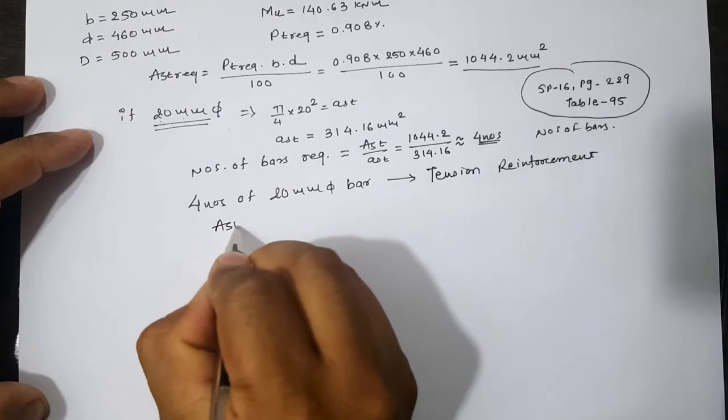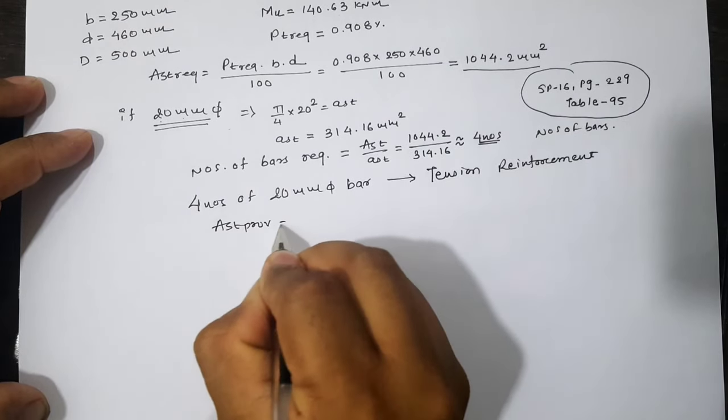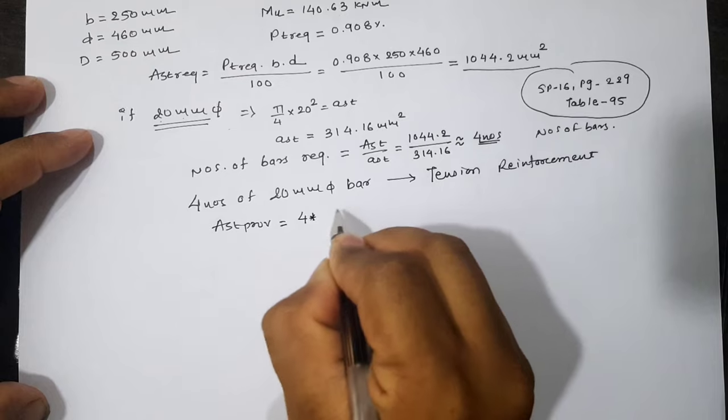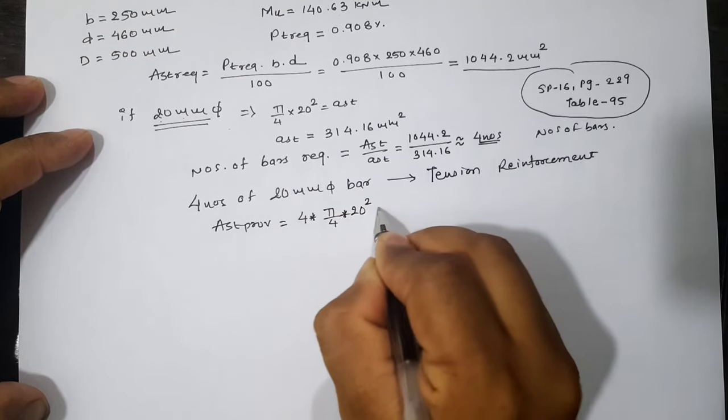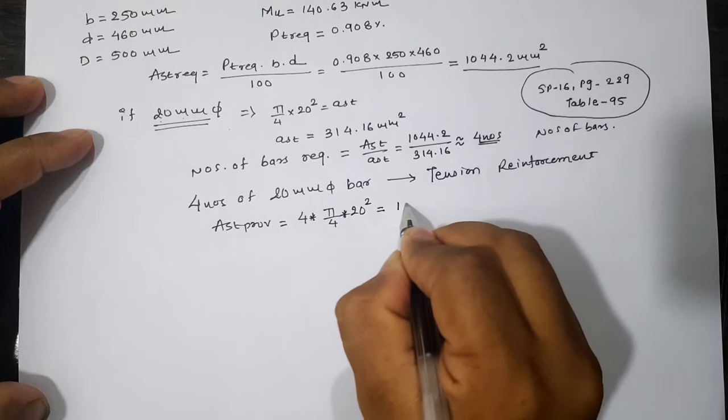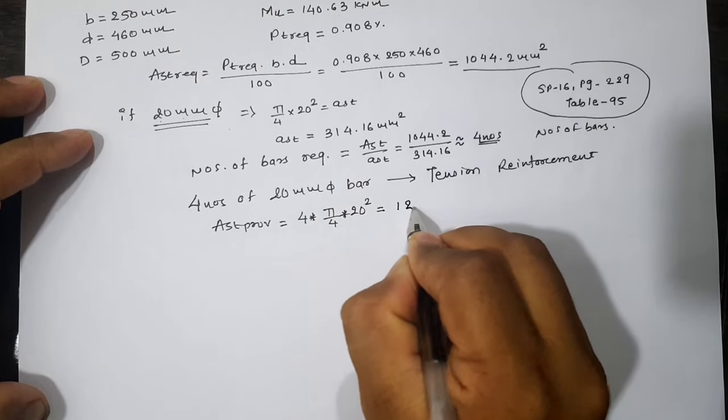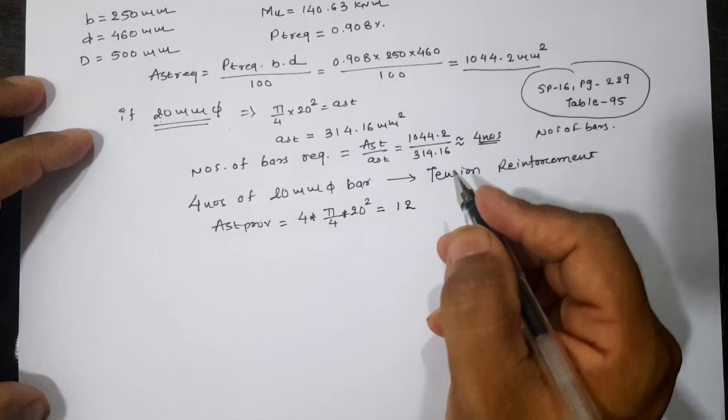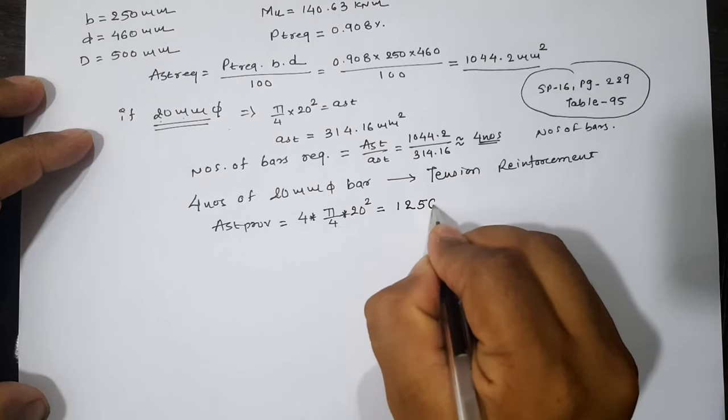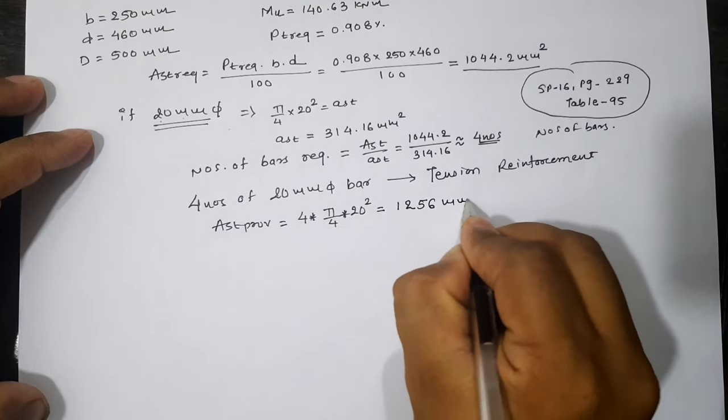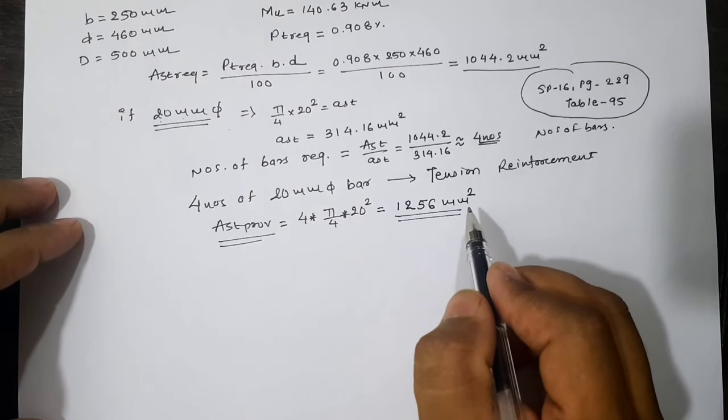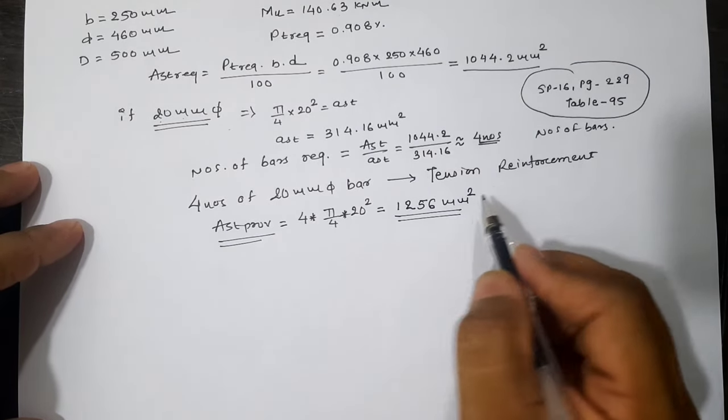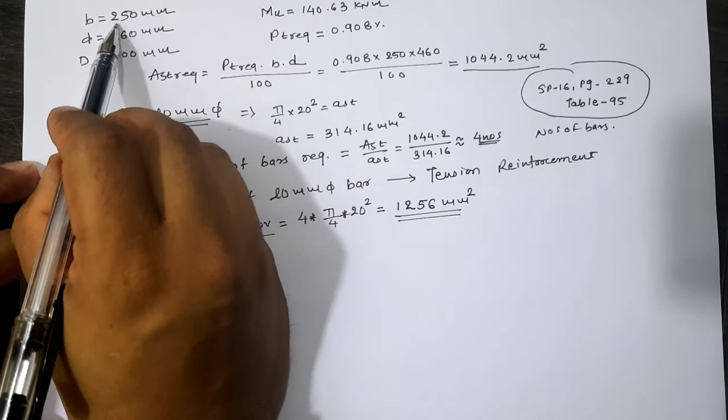So total AST provided is equal to four times the area of 20 mm diameter bar, which equals 1256 mm².